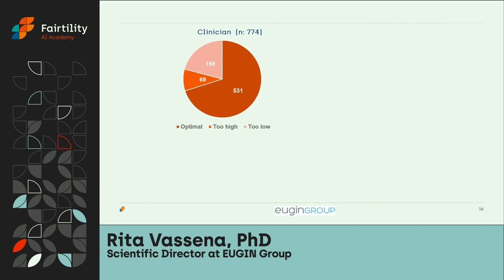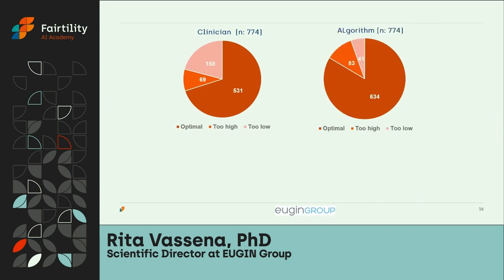When the algorithm is applied, the proportion of patients receiving the optimal dose increases from 531 to 634 — a significant improvement. There is also a very significant decrease in patients given too low a dose of FSH, which is expected given the algorithm's tendency toward higher dosing. However, the number of patients given a dose that is too high increases from 69 to 83, so the algorithm overdoses slightly more patients than clinicians do.